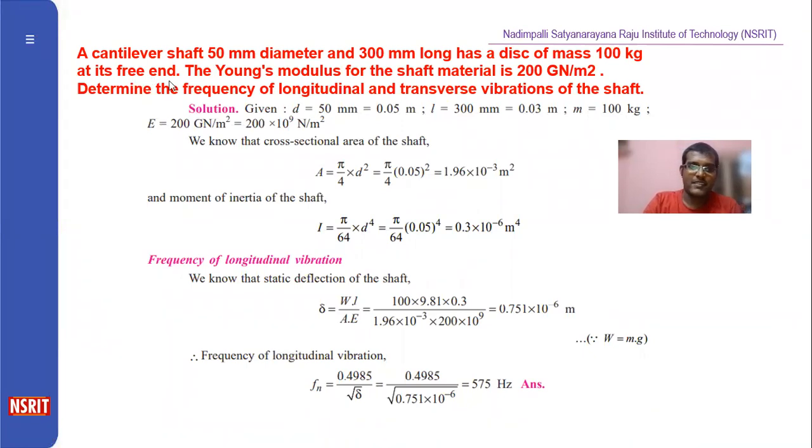Free end means cantilever at free end. The Young's modulus for the shaft material is 200 GN/m². So given Young's modulus, we have to convert into N/m².